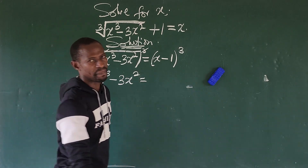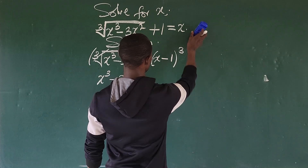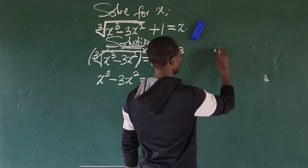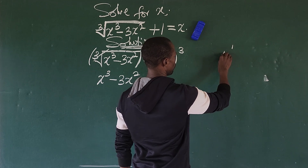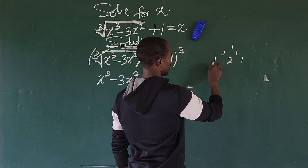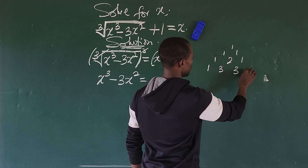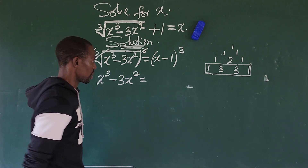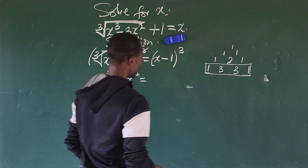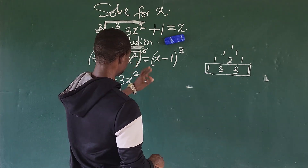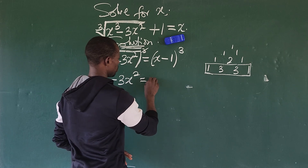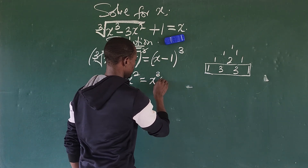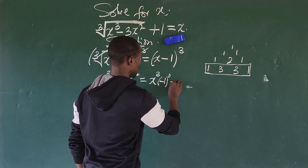We use the binomial expansion to expand (x minus 1) cubed. From Pascal's triangle, the coefficients are: 1, then 1-1, then 1-2-1, and then 1-3-3-1. So we are looking at the row 1, 3, 3, 1 for a cube expansion. The first term is x to the power of 3, times (minus 1) to the power of zero.